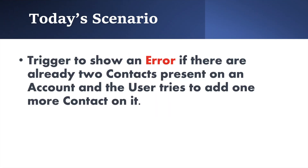Today we are going to limit the number of contacts per account. We will code to ensure that each account has only a maximum of two related contacts. This means if two contacts are present on an account and a user tries to add a third contact, it should not get added and the user will see an error message like 'an account can have a maximum of two related contacts.'